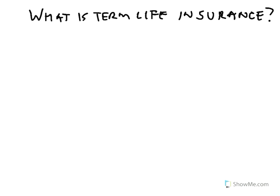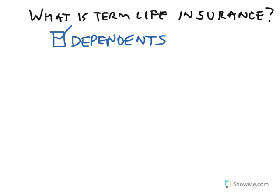Hi, my name is Spencer Liu, and today I'm going to talk with you about what is term life insurance. Most people look for term life insurance if they have dependents — that's the primary reason. If you have dependents, people that rely on you for your income, then you're going to want to take a look at a term life insurance policy.